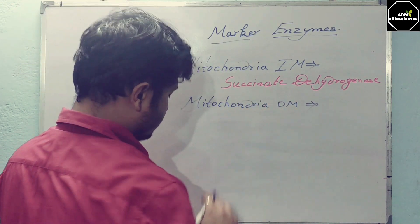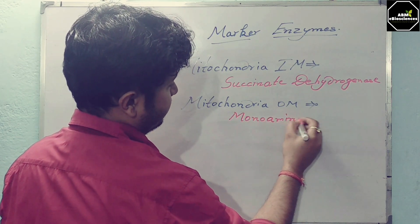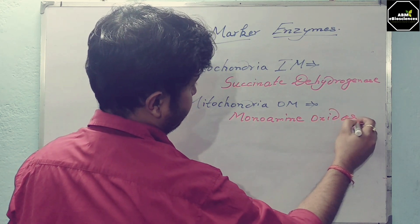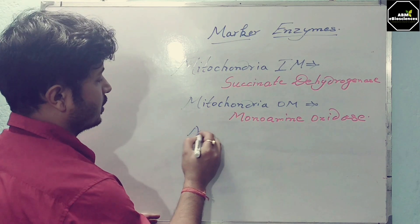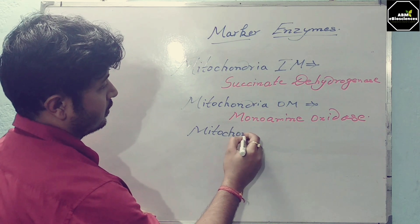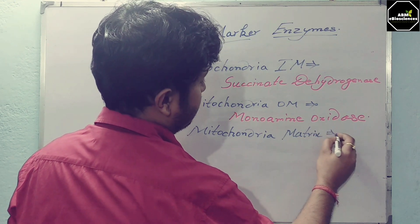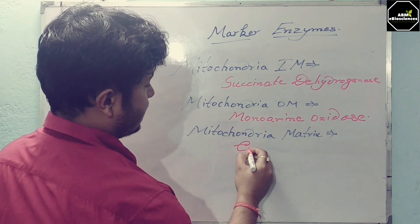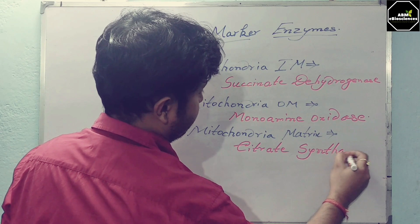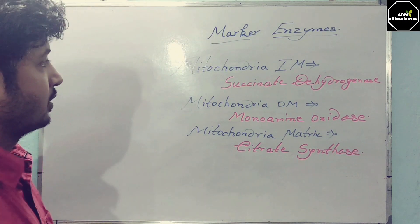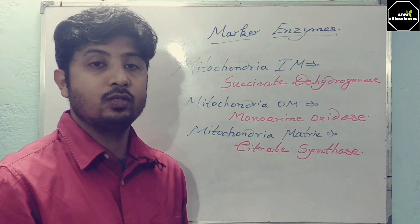For the mitochondrial outer membrane, you can use monoamine oxidase as the marker enzyme. For the mitochondrial matrix, you can use citrate synthase. These are very crucial enzymes — three marker enzymes specifically used to identify different compartments of the mitochondria.